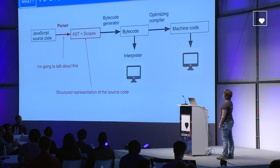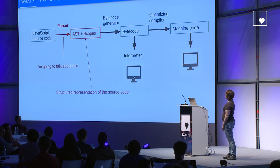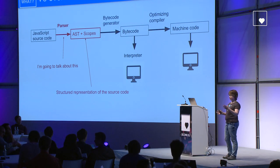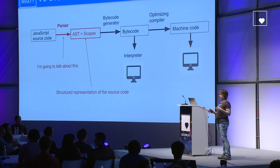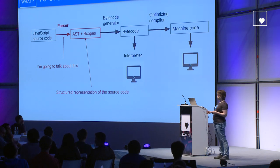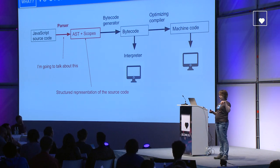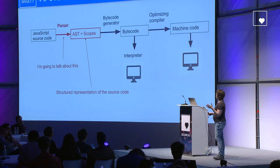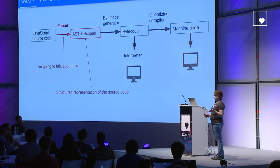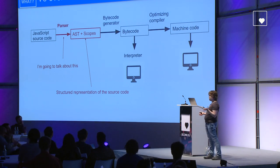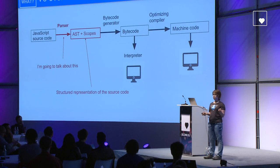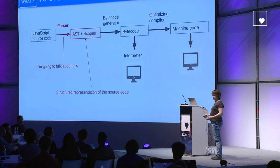So what is parsing? The parser gets the JavaScript source code and constructs data structures called AST and scopes based on it. Then the bytecode generator walks those data structures and generates bytecode, which is then executed by the interpreter. The optimising compiler also gets the bytecode and constructs machine code based on it, and then the machine code is executed directly.